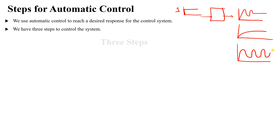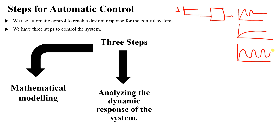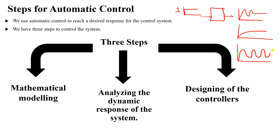The first of three main steps to control a system is mathematical modeling. We take our system and model it — we observe the equations that represent our system mathematically in order to find the transient or dynamic response. By analyzing this response, we can design a controller to adjust parameters and reach a certain steady-state value or dynamic response.